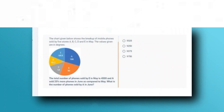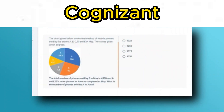The question is: the chart given below shows the breakup of mobile phones sold by five stores A, B, C, D, and E in May. The values given are in degrees. The pie chart shows: 64.8° for E, 108° for A, 90° for B, 54° for C, and 43.2° for D.